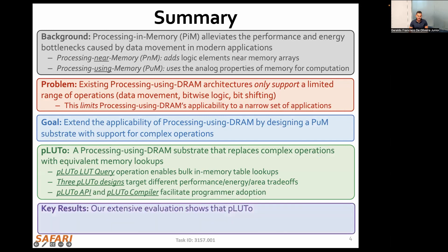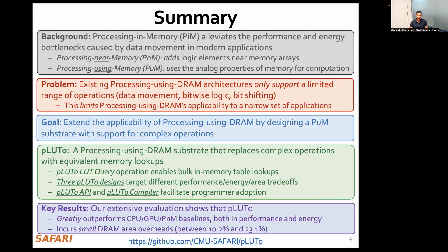We evaluate Pluto and compare it against three processor-centric designs. Our evaluation shows that Pluto achieves between one and three orders of magnitude higher speedups relative to the baseline system while incurring a small area overhead. Our infrastructure is publicly available in our GitHub repository.